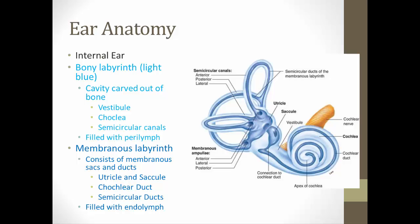Living inside the cave is a very bizarre-looking snake — that snake is the membranous labyrinth, consisting of various sacs and ducts. The utricle and saccule are housed in the vestibule portion of the cave. The cochlear duct is found inside the cochlea portion of the bony labyrinth, and we have semicircular ducts inside the semicircular canals. The membranous labyrinth itself is filled with endolymph.